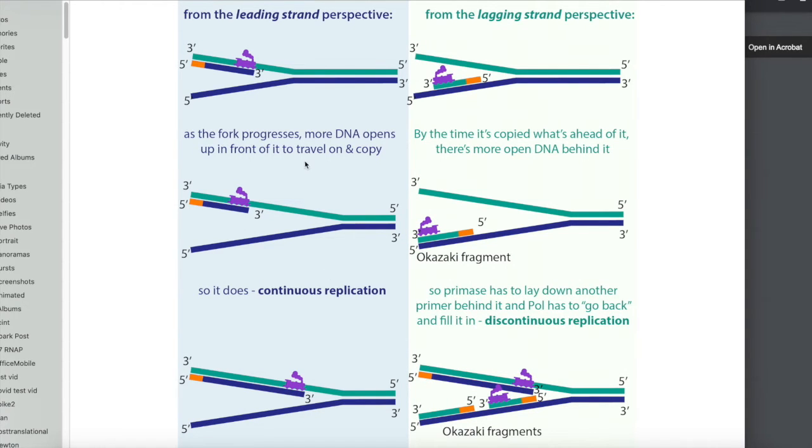So from the leading strand perspective, you have the fork progressing more with the help of the helicase and more DNA is opening a copy. It's opening up in front of it so it can travel on it and copy. And so it does this and you get continuous replication. But from the lagging strand perspective, so from that other strand, it's copying, but the zipper is unzipping the other direction. And so it's getting like further away from the point. So it has to come back. It has to like go back and fill in the gaps. And so you get these discontinuous replication. And these fragments are called Okazaki fragments, because they were discovered by the Okazakis.